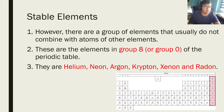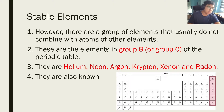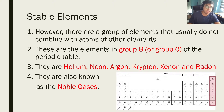The group 8 elements are: helium, neon, argon, krypton, xenon, and radon. Group 8 are also known as noble gases. These elements are all gases.